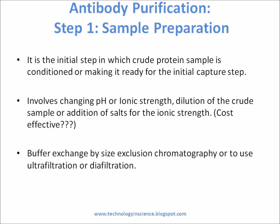Antibody precipitation can be done to precipitate out impurities; salts used for this purpose include ammonium sulfate, polyethylene glycol, etc. If the antibody is expressed in cell line media, contaminants such as phenol red need to be removed, as they can bind to the column and reduce the efficiency of the purification process.